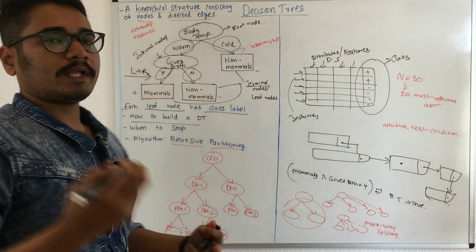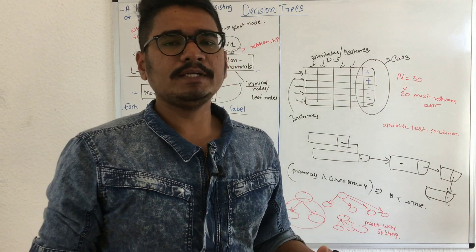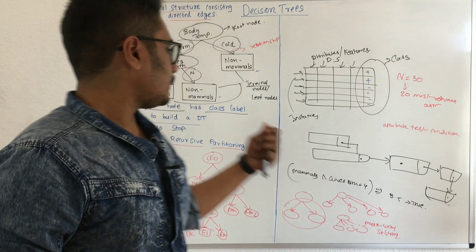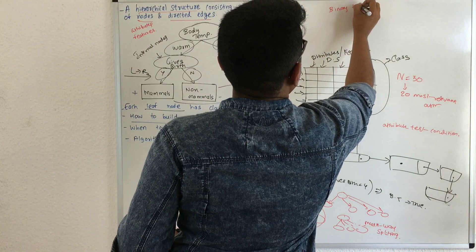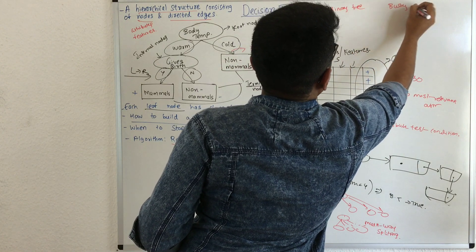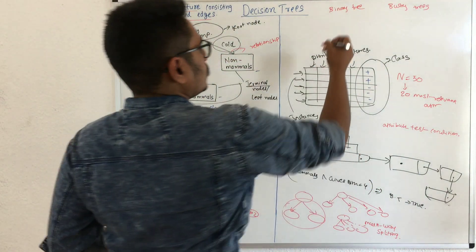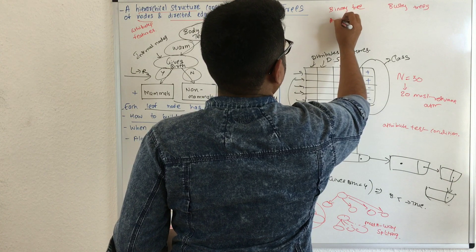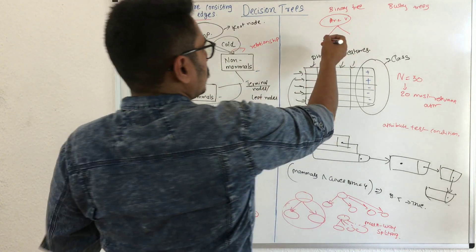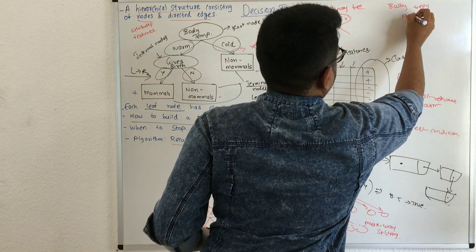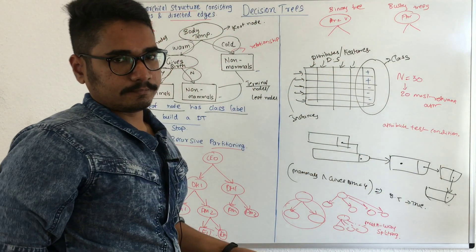There are two main types of trees in machine learning: binary trees and bushy trees. Binary trees split on an attribute and value, producing internal nodes with two branches. Bushy trees split on only the attribute and divide the data into two or more splits.